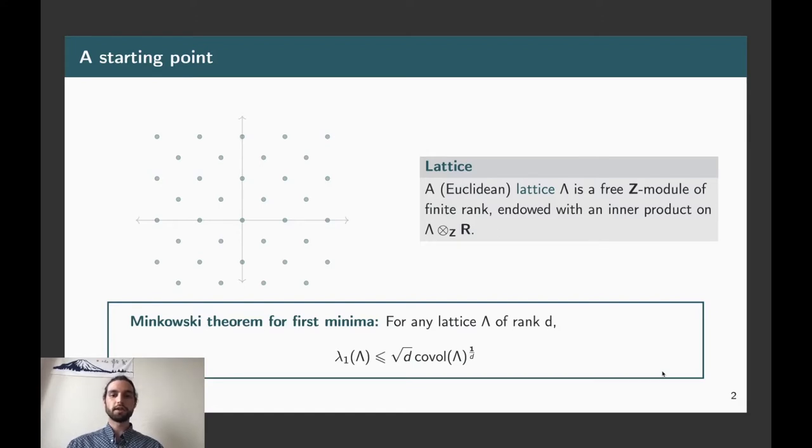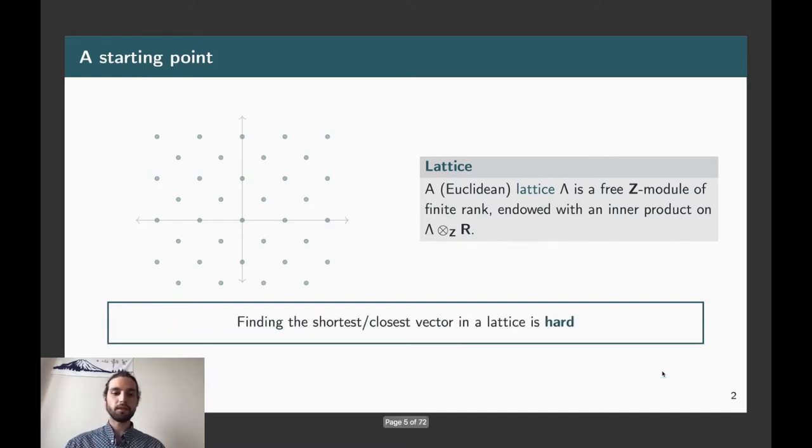A very interesting property of lattices is that for any lattice lambda of fixed rank D, then we are sure by Minkowski theorem that we can find a vector which is somehow small compared to the normalization of the covolume which encodes somehow how dense your lattice is. The problem is that even though we know that such a short vector exists, finding it computationally is very hard.